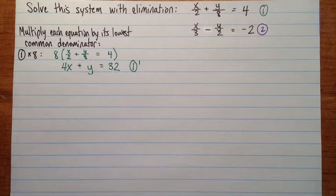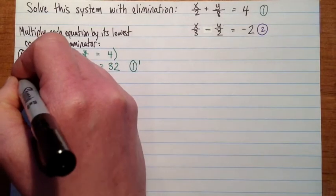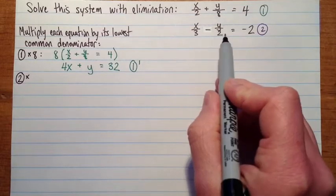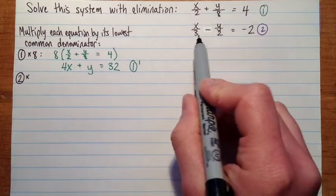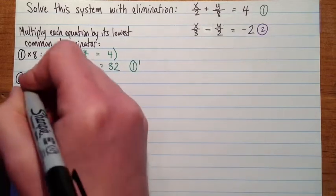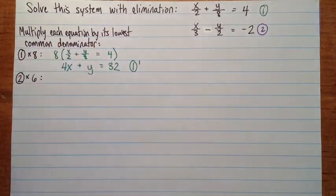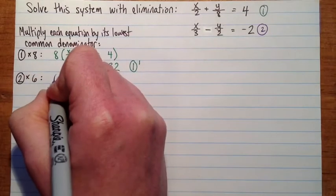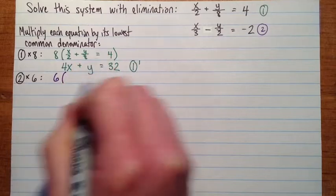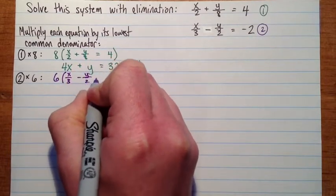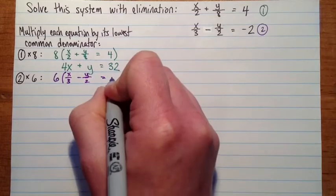For number 2, we'll do number 2 times, and then the lowest common multiple or lowest common denominator of these two, so it's going to be 6. So number 2 multiply by 6. So that's 6 times x over 3 minus y over 2 equals negative 2.